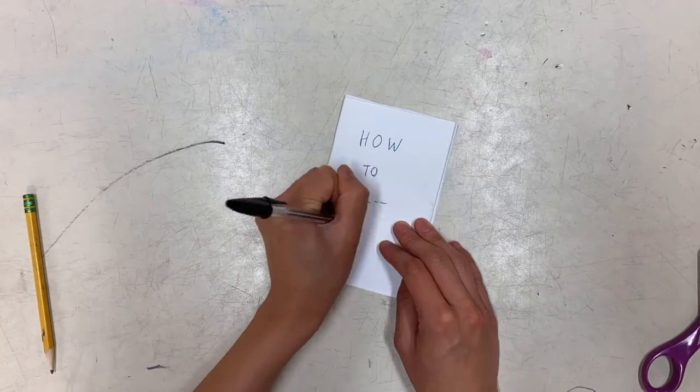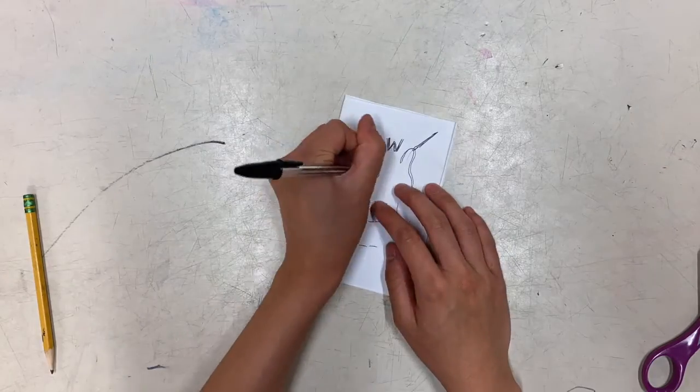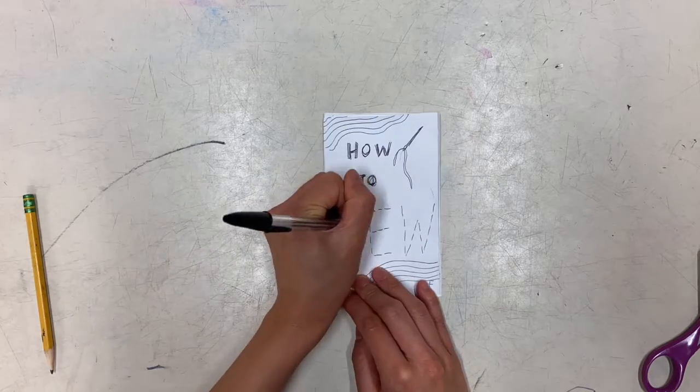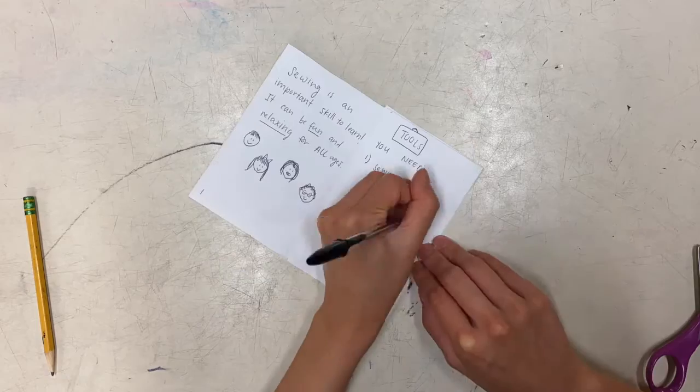After folding and cutting, you are ready to start your zine. You can draw and color with markers, colored pencils, or crayons, or you can collage and cut out paper scraps or magazine pictures to decorate your zine.